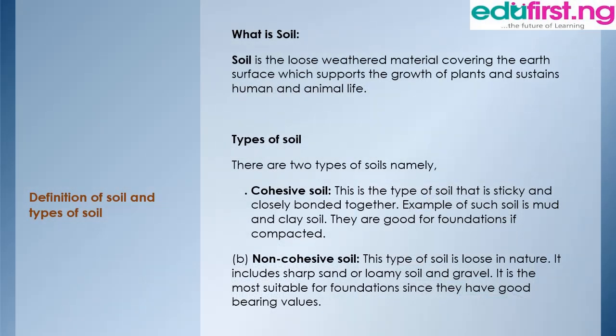Then we move on to soil. What is soil? Soil is a loose, weathered material covering the earth's surface which supports the growth of plants and sustains human and animal life. There are two types of soil in construction: cohesive soil, which is sticky and closely bonded together — examples include mud and clay — and non-cohesive soil, which is loose in nature and includes sharp sand, loamy soil, and gravel. Non-cohesive soil is most suitable for foundation since it has good bearing value.